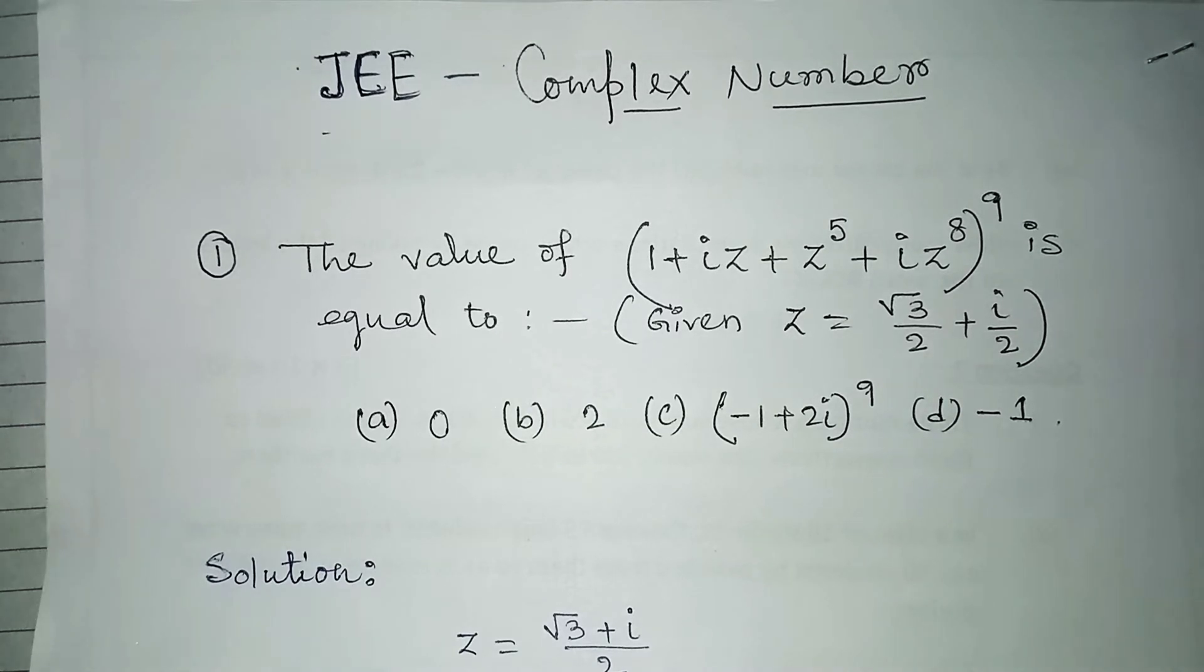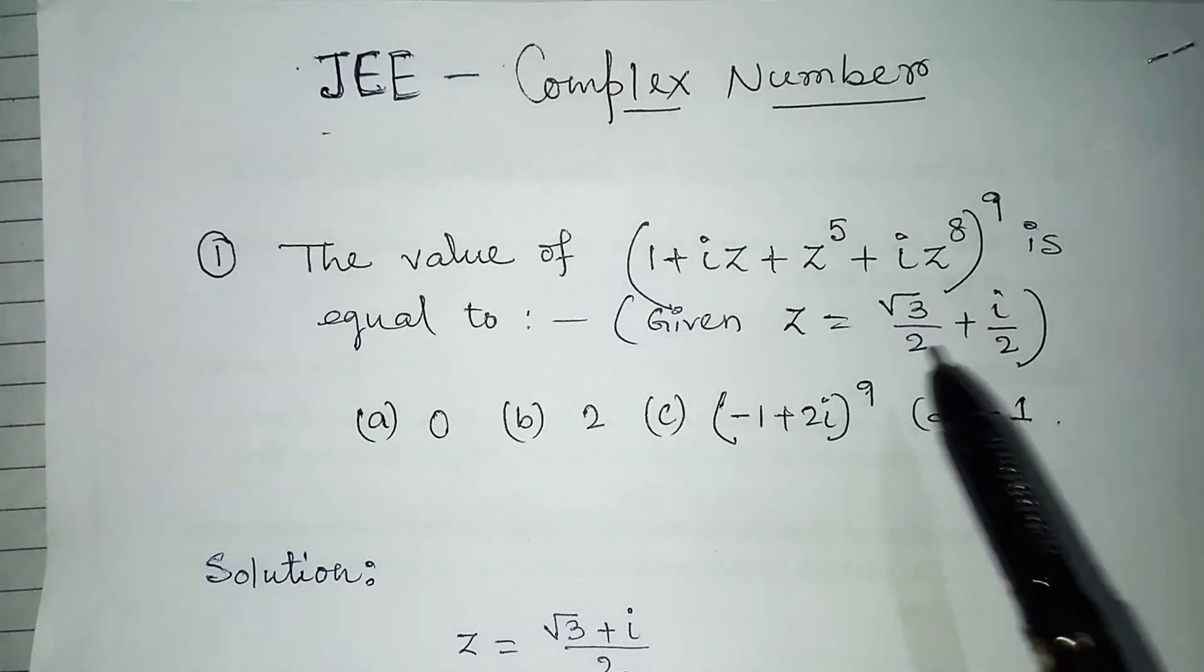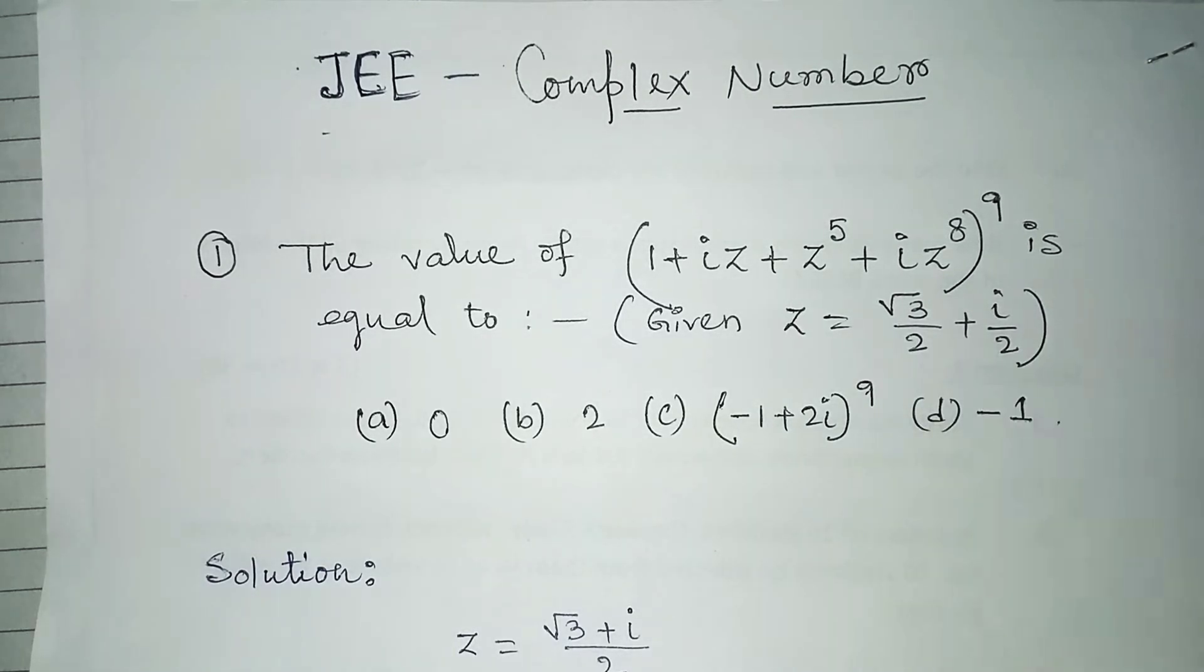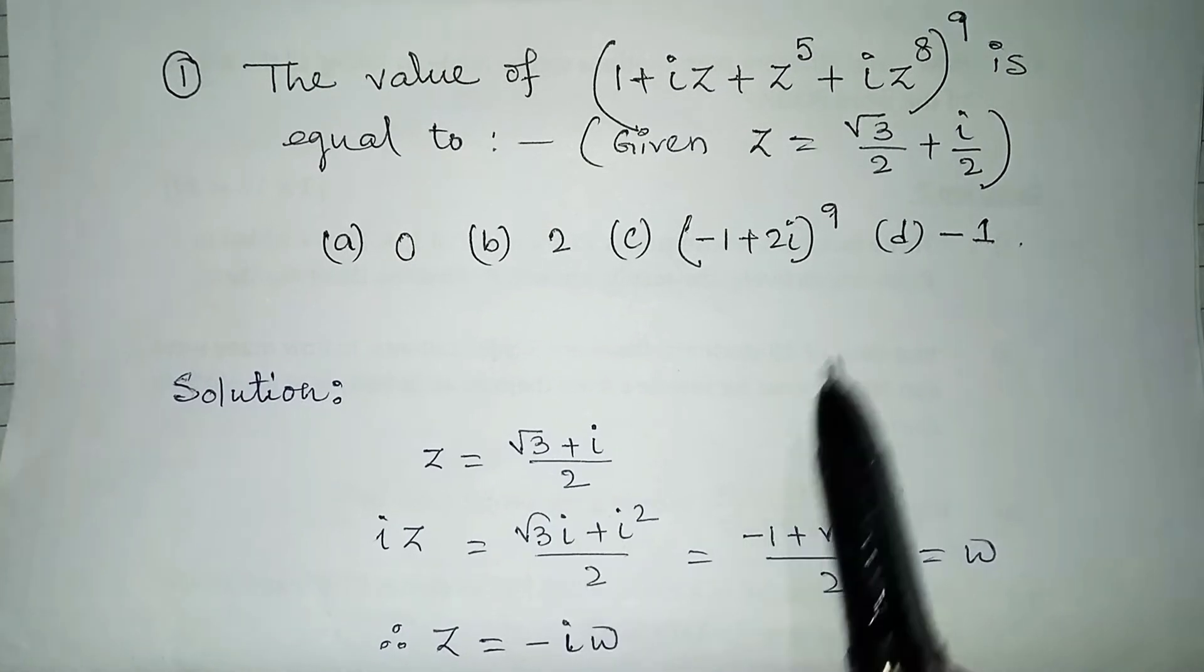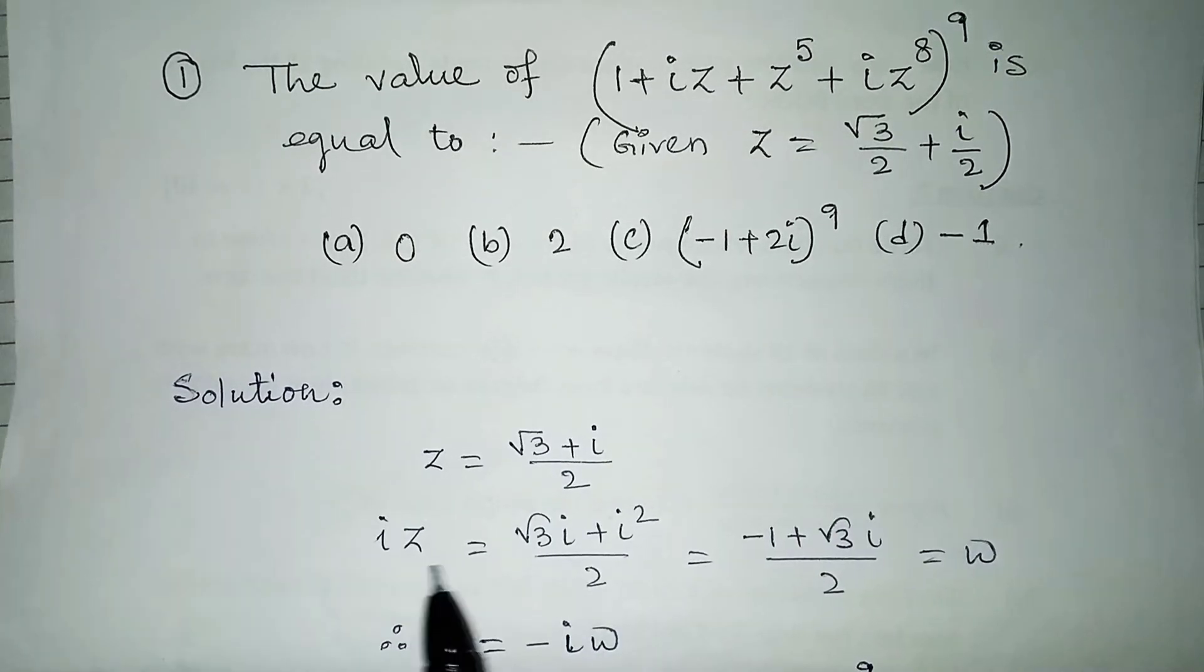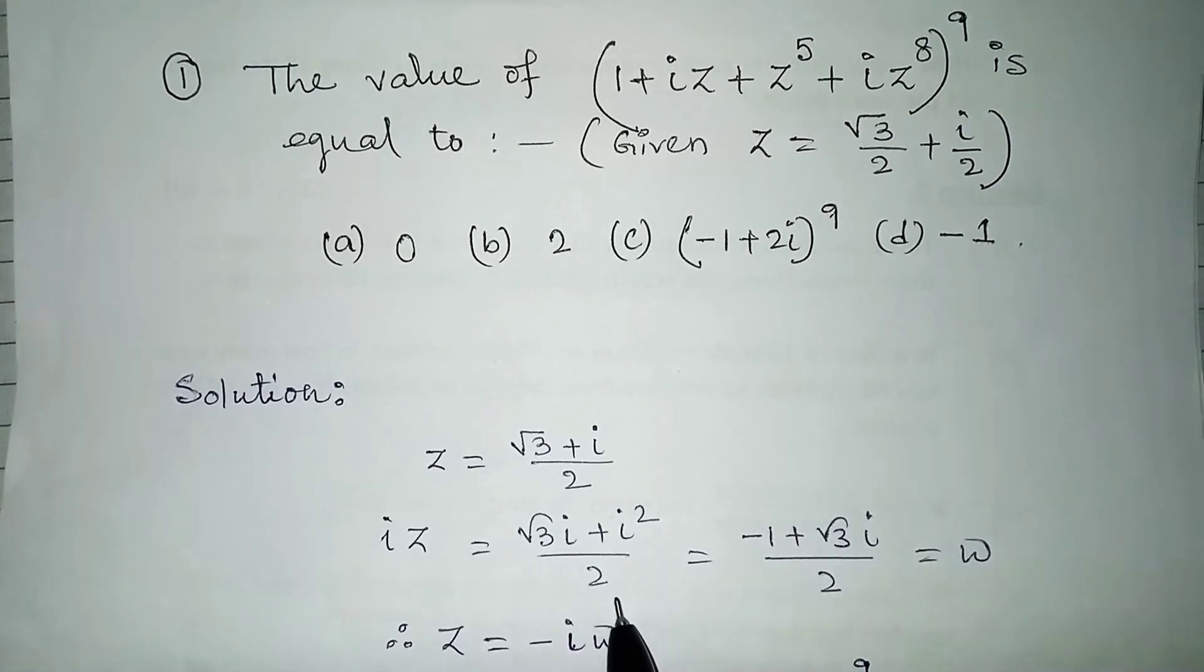So whenever you see the z, try to convert in exponential form or it is in the omega form. You can see root three and i is here, so it's a little related to omega's values. So we will find out. Z is root three i by two.